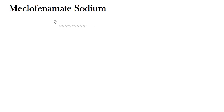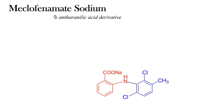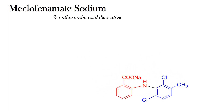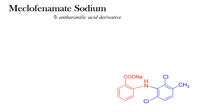Like meclofenamic acid, meclofenamate is a derivative of anthranilic acid. The second part of the compound is derived from dichlorotoluene.